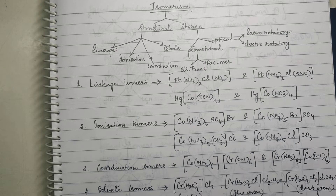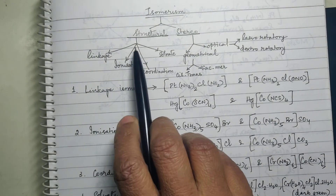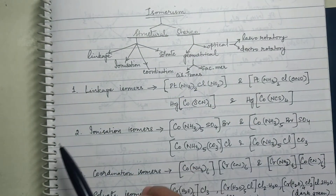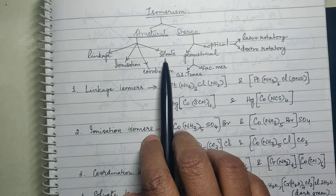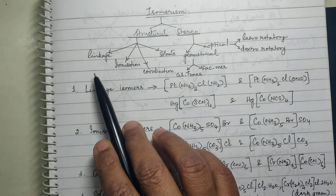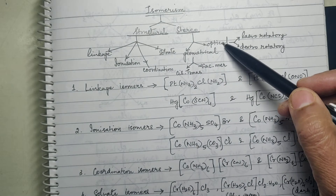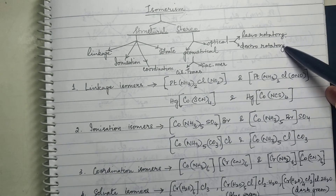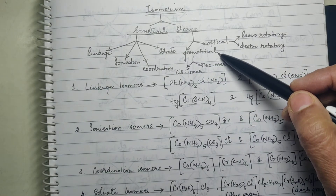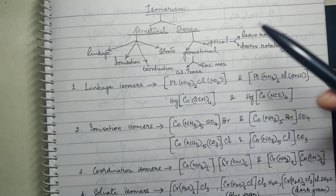We have started with coordination compounds. After naming, the next topic is isomerism. Isomerism of coordination compounds is basically of two types: structural isomerism and stereoisomerism. Structural isomerism is further classified as linkage, ionization, coordination, and solvate or hydrate isomerism. Under stereoisomerism, you have geometrical isomerism and optical isomerism. Under optical you have levorotatory and dextrorotatory isomers, and under geometrical isomerism you have cis-trans isomerism and fac-mer isomerism.